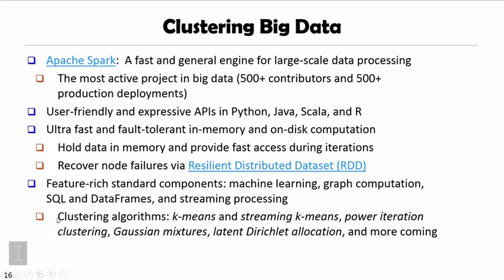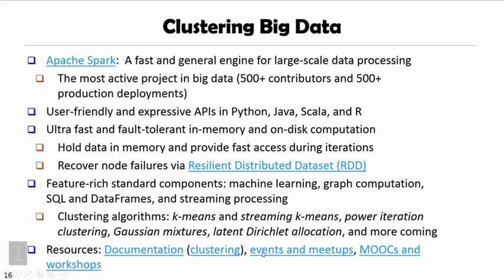For clustering algorithms, Apache Spark supports k-means, streaming k-means, power iteration clustering, Gaussian mixtures, latent Dirichlet allocation, and many more. I provide some pointers — you may click there and watch some MOOC videos to learn more about how to cluster big data.